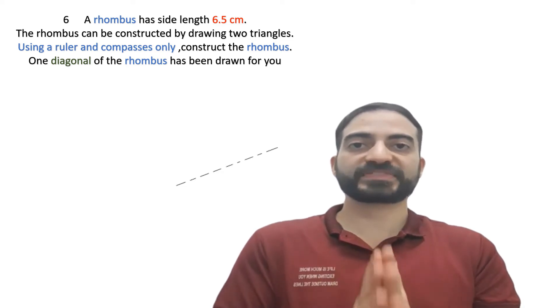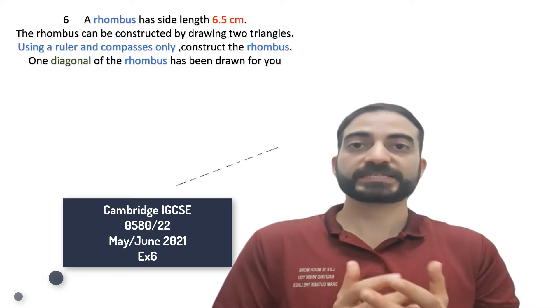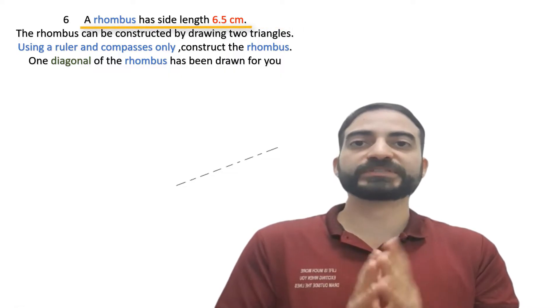Hello everyone! In this video, we will solve the second question for the Cambridge IGCSE 2021 competition. This question tells us a rhombus has a side length of 6.5 cm.